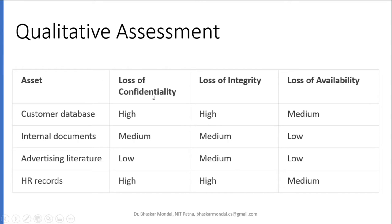Now, come to quantitative assessment. We have seen the losses — what kind of losses. The parameters are: asset, then loss of confidentiality, loss of integrity, loss of availability. Look at this — customer database is an asset. So loss of confidentiality is very high if it is going to be attacked or leaked. Loss of integrity is very high. Loss of availability is minimum.